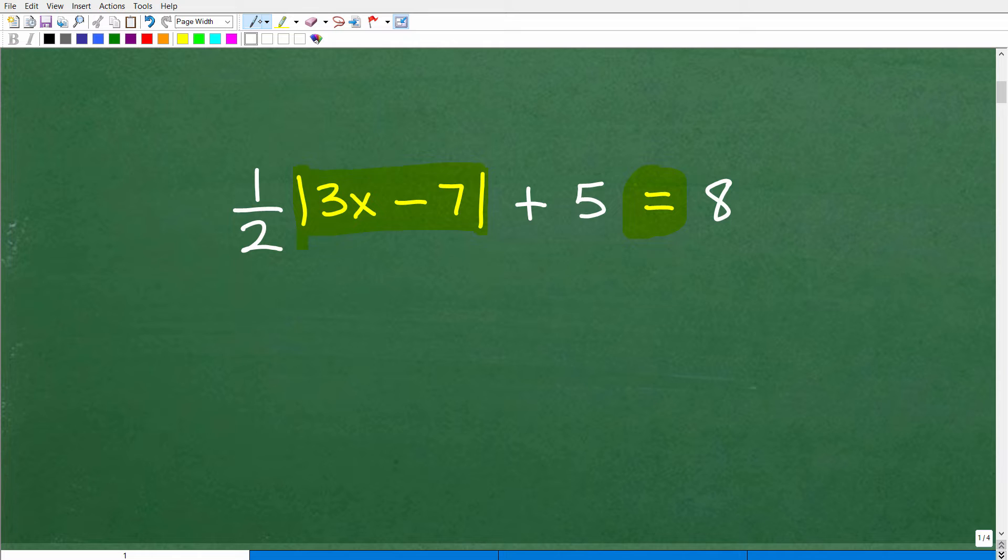Now before you tackle this equation, it's important that you already know how to solve something like this. X plus 4, an absolute value of X plus 4 is equal to, let's say, 9. Okay, so this is a more basic type of absolute value equation, but effectively we're going to be doing more or less the same thing.